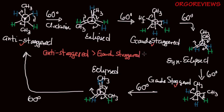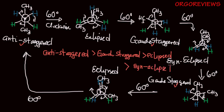Looking at the eclipsed conformations, there are two eclipsed structures that are the same, and then we have the syn-eclipsed, which has the highest energy and the lowest stability. The eclipsed conformations are next in terms of stability after the staggered, and they are more stable than the syn-eclipsed. This gives us the decreasing order of stability.